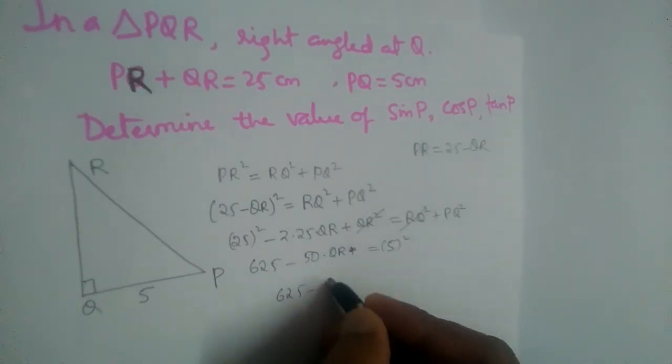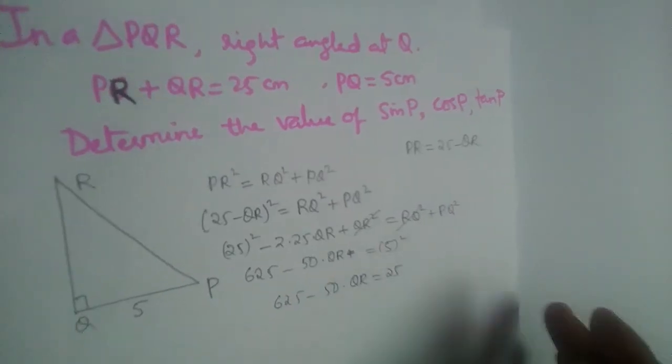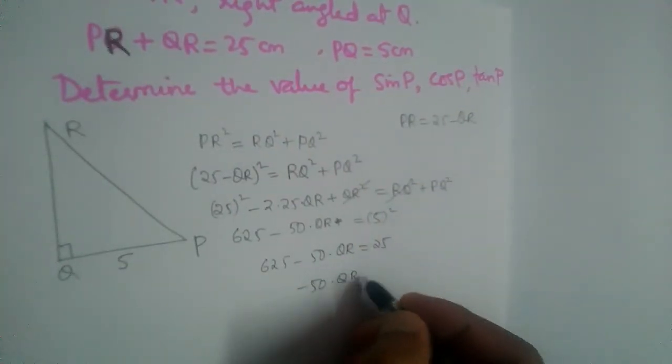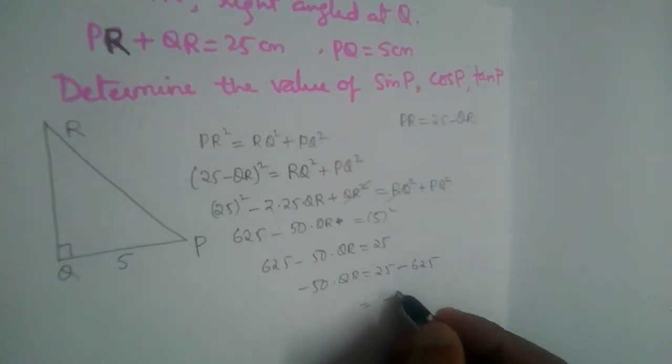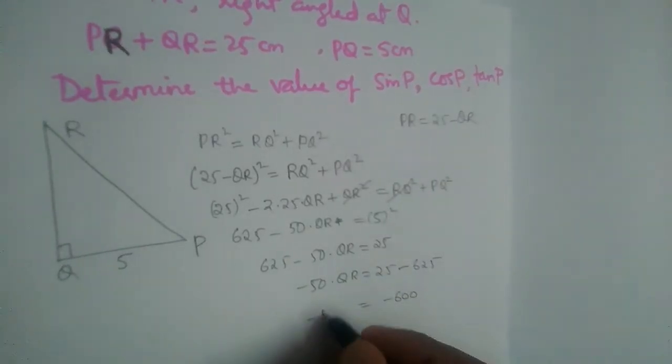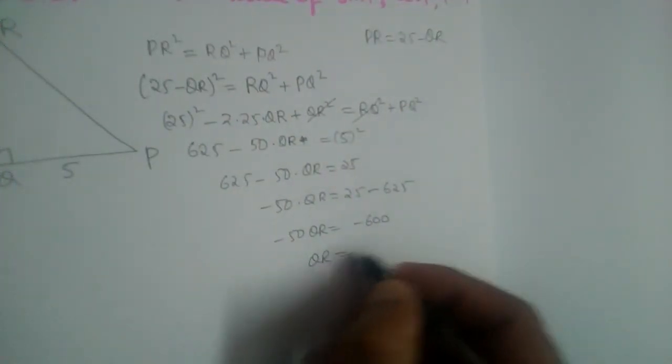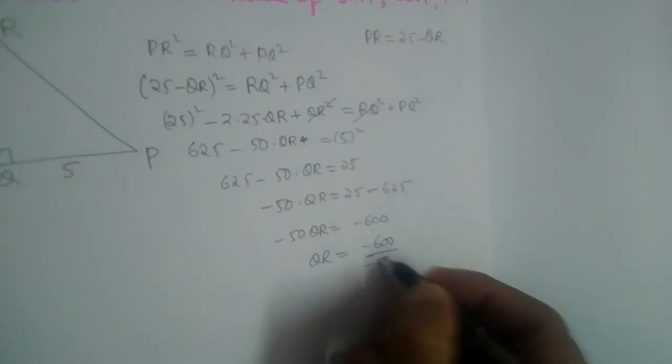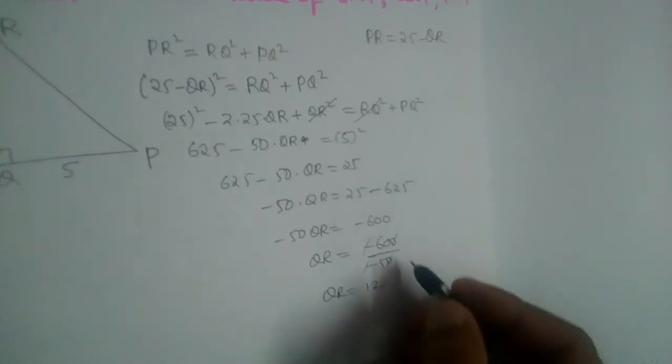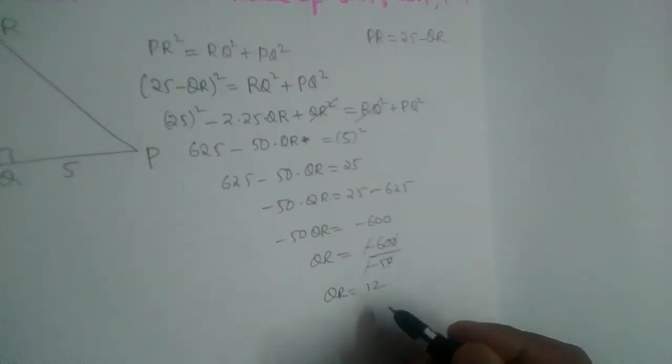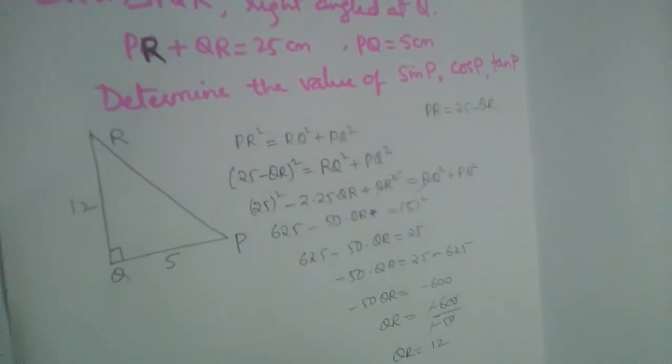So 625 - 50QR = 25. 625 goes on the other side, becomes minus. So 25 - 625 = minus 600 = -50QR. Minus 50 goes on the other side, it divides. Minus minus cancel, zero zero cancel. So QR will be 12. 60 by 5 is 12. So QR is equal to 12.